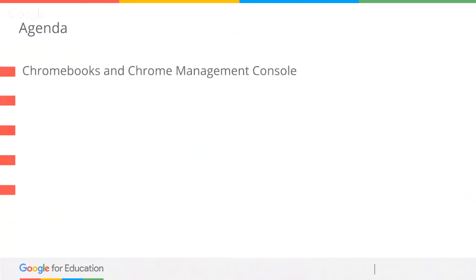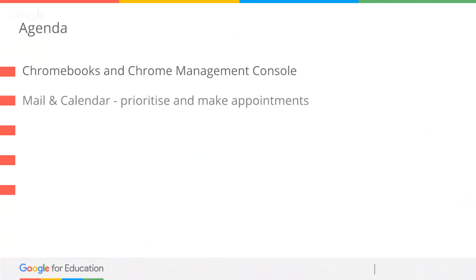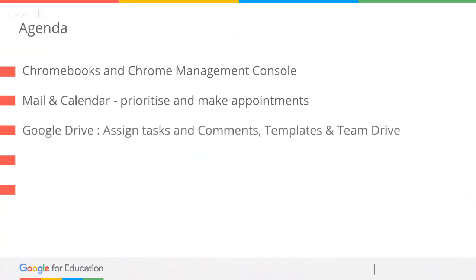The agenda is pretty straightforward. We're going to have a very short look at Chromebooks and the Chrome Management Console — we have a couple of brilliant webinars coming up soon that will cover those in great detail. We'll be looking at mail and calendar, in particular prioritizing in mail and making appointments in calendar. We're also going to have a look at Google Drive, and for me there are two big new things that have happened there which are very exciting.